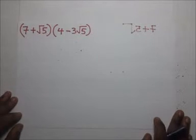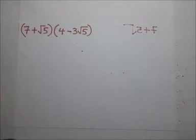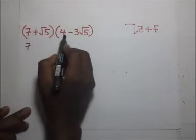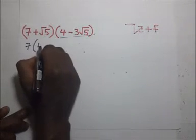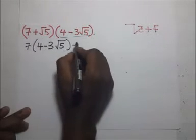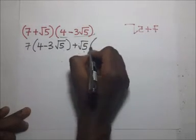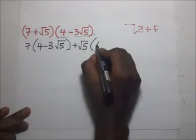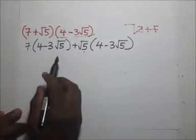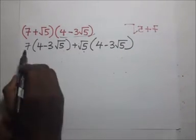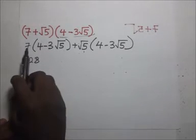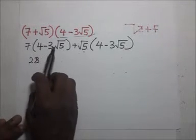Going on to the next example, we are going to do the same as before. This is going to become 7 times the whole bracket (4 − 3√5), then plus √5 into the whole bracket (4 − 3√5). We go ahead and open brackets: 7 times 4 is going to be 28.